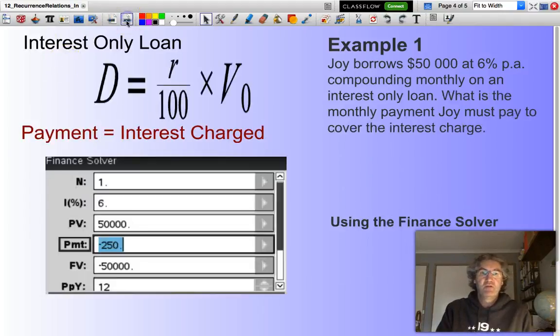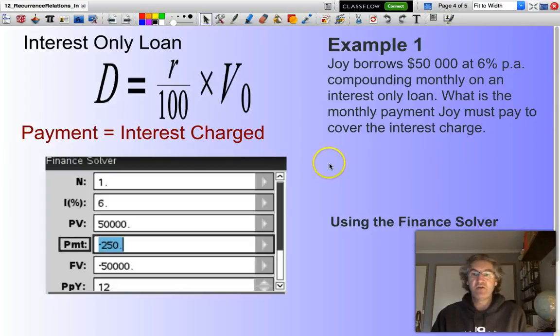This also can be calculated using your Finance Solver app on your calculator. All we're doing is considering one monthly payment. You'll notice here, I'll have 12 payments per year, calculations per year, because compounding monthly.